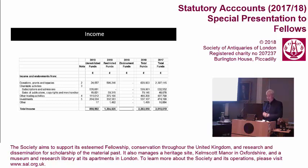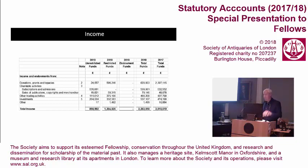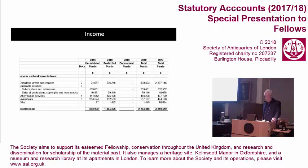This year the accounts show unrestricted, restricted and endowment income and expenditure. Just to remind you: restricted funds — bequests, donations, grants — can only be spent on particular specified purposes. Unrestricted funds can be spent on any of the society's activities, and endowment funds relate to the capital that provides income for the support of specified objectives.